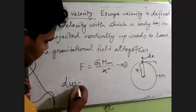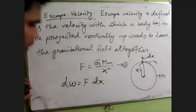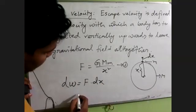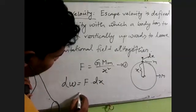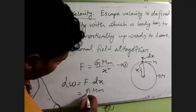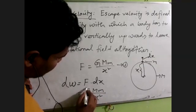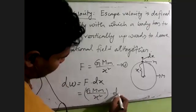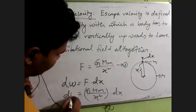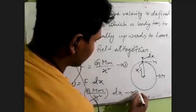Therefore, dw is equal to f·dx. So I am going to write GM by x squared dx. dw is equal to f·dx.